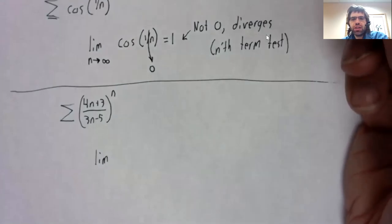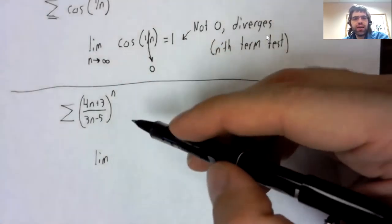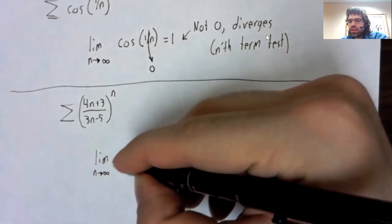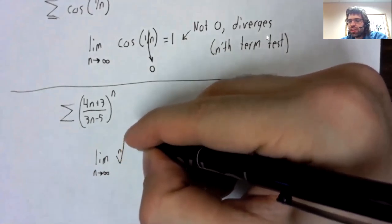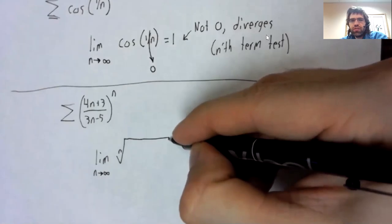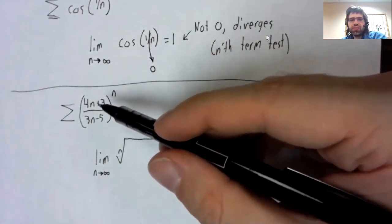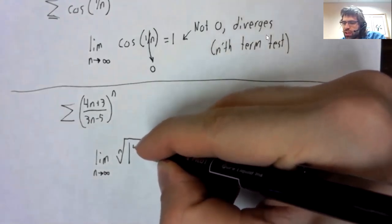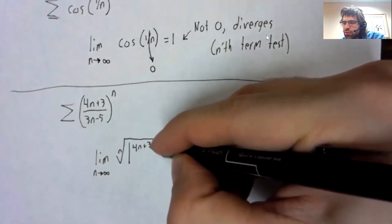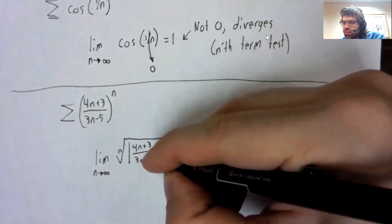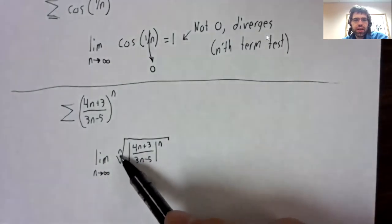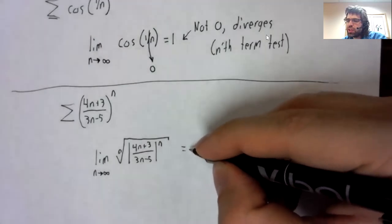And the reason I think that the root test will be a good idea here is that it involves taking the limit as n goes to infinity of the nth root of this thing. Properly speaking, I guess we need absolute values, although all of this is positive.